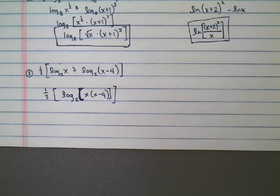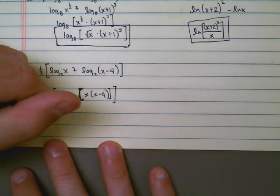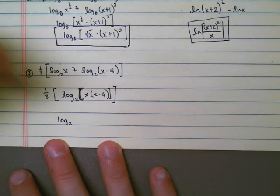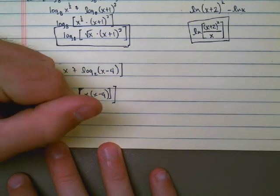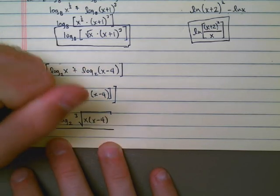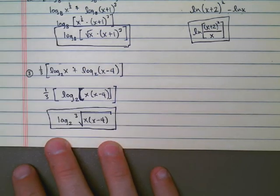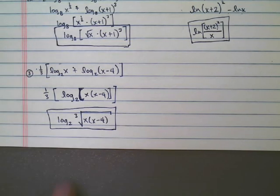And so my last step is this. I know that really this one-third out front means that I'm raising all the stuff here to the one-third power. I've already got a single logarithm. And so my final answer is going to be log base 2 to the one-third power. That's the same thing as a cube root. So I'm going to write that as the cube root of x times (x-4). And it turns out that this is the same exact thing as what I started there. If that makes sense, then you're ready to go on and do some homework problems.